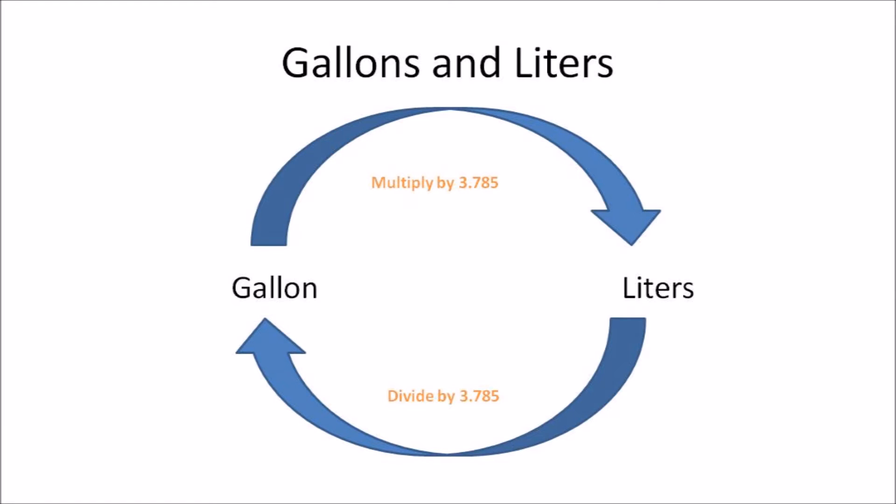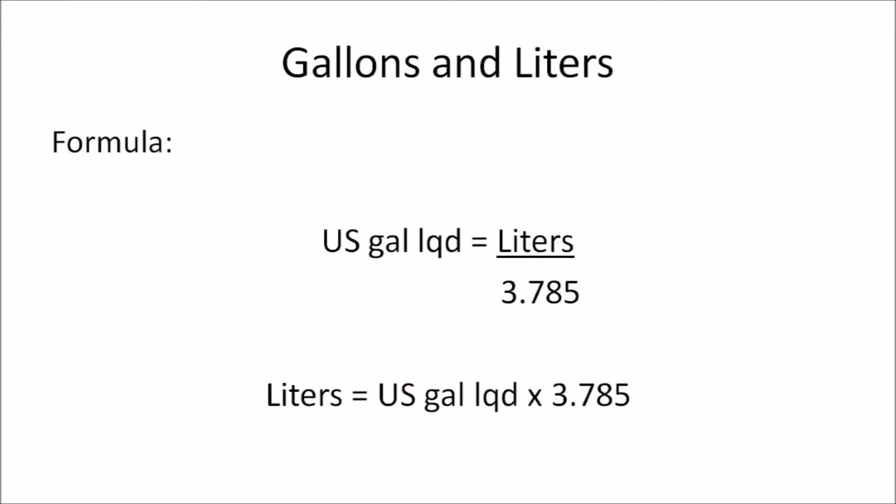3.785 is the conversion factor for this video. There are other conversion factors but I find 3.785 the easiest to remember. I've written down two formulas: U.S. liquid gallon is equal to liters divided by 3.785, and liters is equal to U.S. liquid gallon multiplied by 3.785. You can use these two formulas when converting, or you can use the diagram shown earlier. Remember the number 3.785, and you can decide how many decimal places you'd like to use.